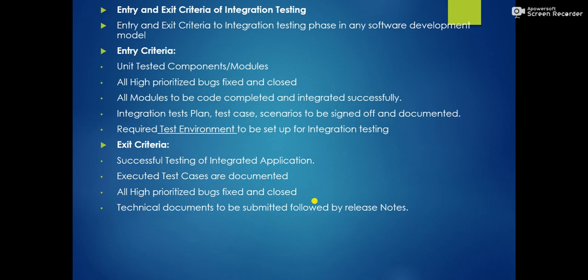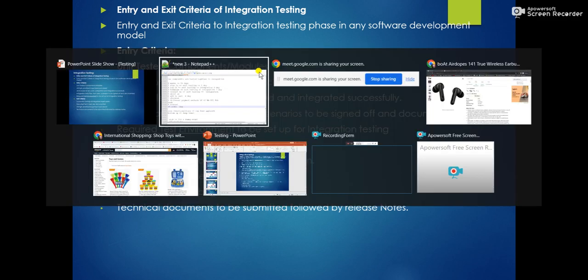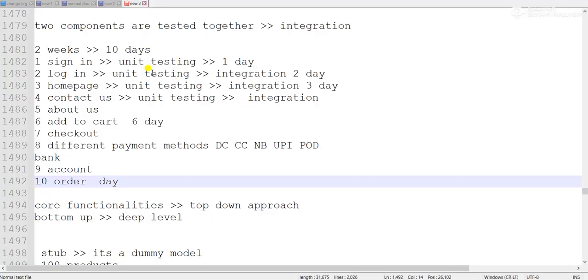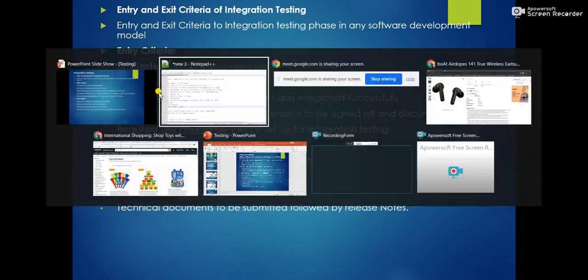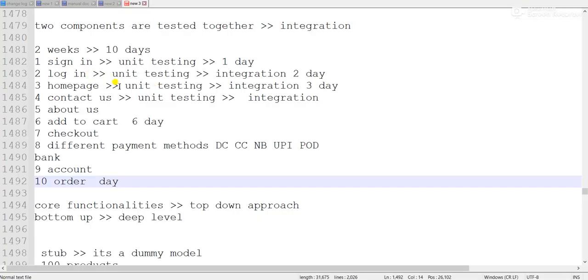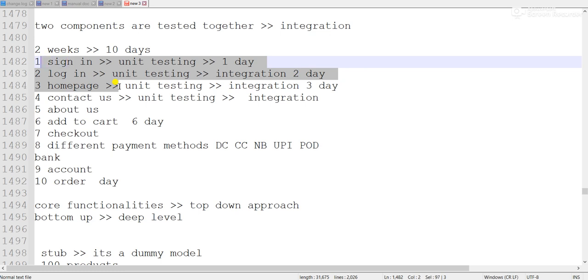Now let's discuss entry and exit criteria for integration testing. The entry criteria is: unit testing of every unit must be complete. If we have 10 models, unit testing must be done on all 10 models first, and then we integrate and do integration testing. High-priority bugs must be fixed and closed. For example, if we are testing three functionalities — sign-in, login, and home page — and login is not working, can we test the home page? No.